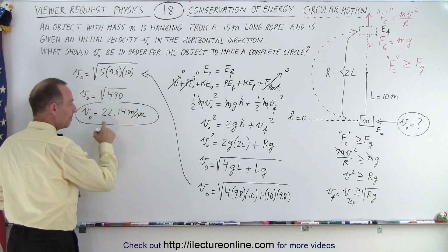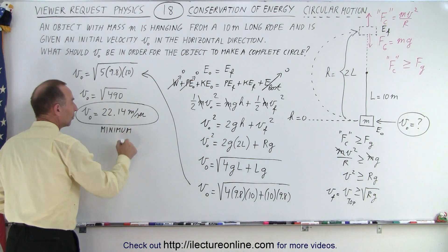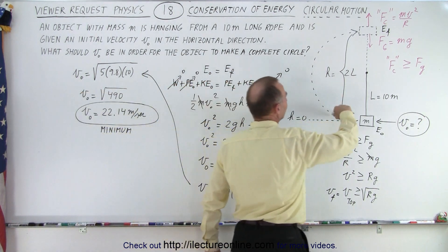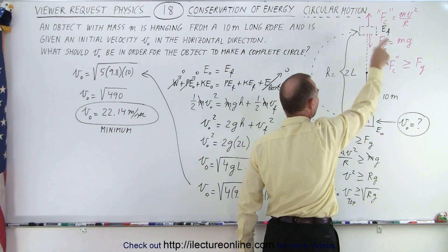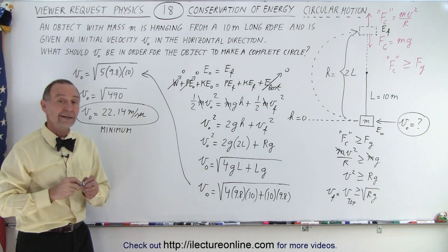And of course, that is indeed the minimum velocity required. Anything less than that, the rope will not stay tight and the object will fall down instead of making a total circular path. And that is how it's done.